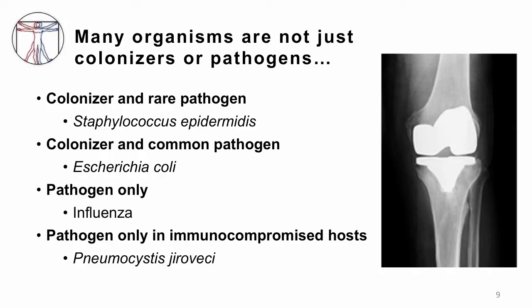Then there are some organisms that are predominantly just pathogens and don't really have a state of colonization — the influenza virus is a good example of that; most people who get influenza virus are going to be ill. And then there are other types of pathogens that are really only pathogenic to immunocompromised patients — we often term these opportunistic infections. Probably the one you may have heard most about in patients with HIV is Pneumocystis jirovecii, previously known as Pneumocystis carinii or PCP. That was one of the first types of infections identified in the 1980s in patients who had AIDS — they were coming down with this type of infection that normal hosts would not get.